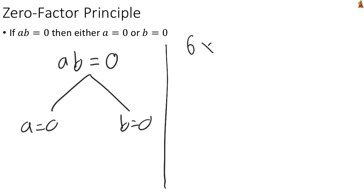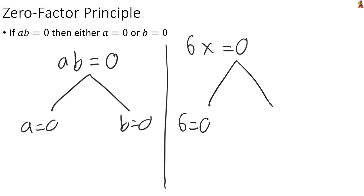Suppose we have 6x equals 0. We're looking at two things, 6 and x, being multiplied together with a result of 0. The zero factor principle says there are two possibilities: either 6 equals 0 or x equals 0. Well, 6 equals 0 doesn't make any sense — 6 and 0 are not the same number, so we throw out that possibility. That leaves us with x equals 0. So if 6x equals 0, then x equals 0.